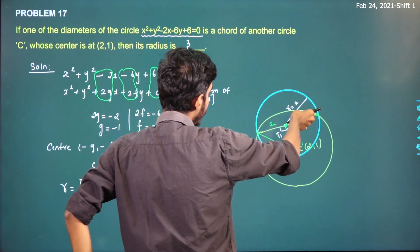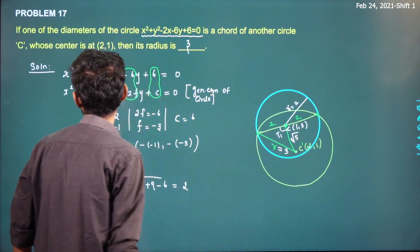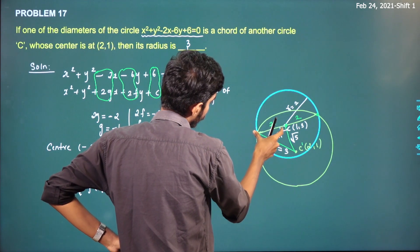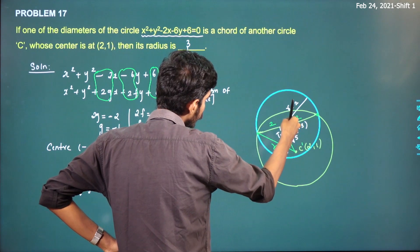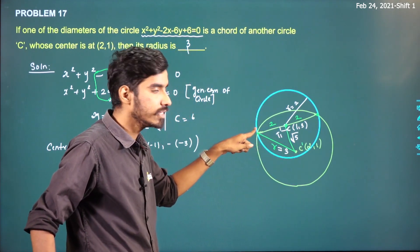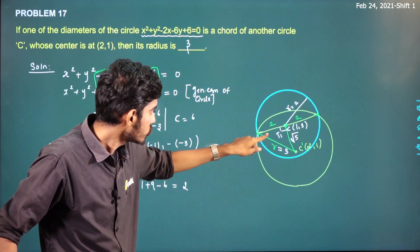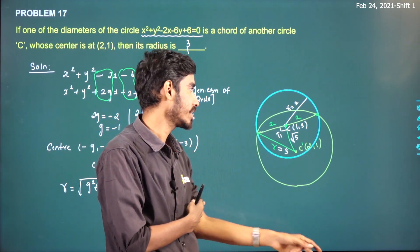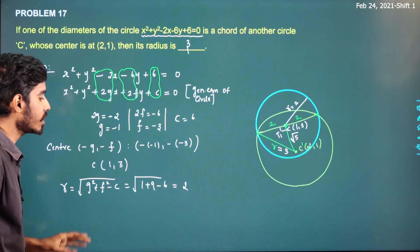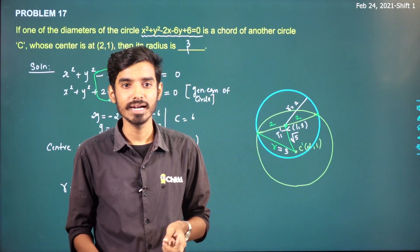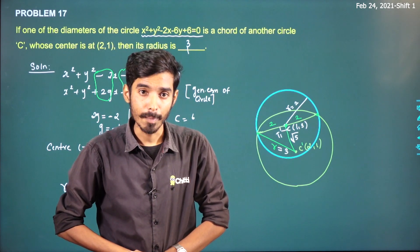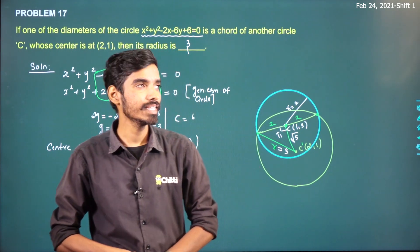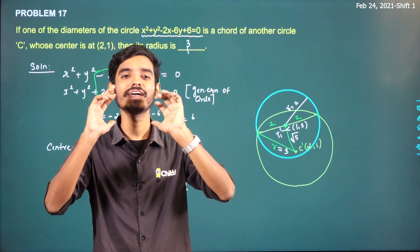So, if one of the diameters of this circle is a chord of another circle whose center is (2, 1), its radius is 3. The distance between the two centers is √5, the radius of the first circle is 2, and using 2² + (√5)² = r² we get r = 3. We will see problem number 18 in the next class. Thank you, all the best.